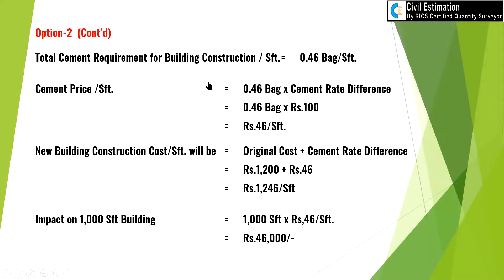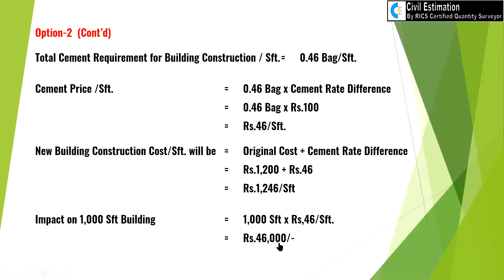The total cement requirement remains 0.46 bag per SFD. Cement price increase per SFD is 0.46 bag multiplied by the rate difference of 100 rupees per bag, giving 46 rupees per SFD. The new building construction cost per SFD is 1200 plus 46, equal to 1246 rupees per SFD. The overall impact on a 1000 SFD building is 1000 multiplied by 46 rupees per SFD, giving 46,000 rupees. So if cement rate increases by 100 rupees per bag, the overall impact on the 1000 SFD building is 46,000 rupees.